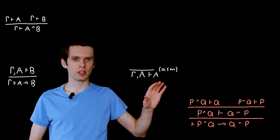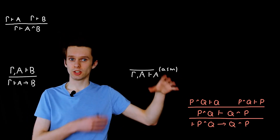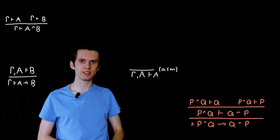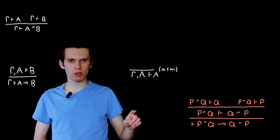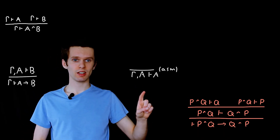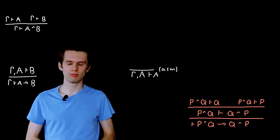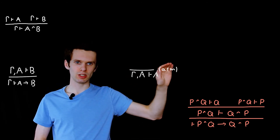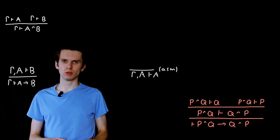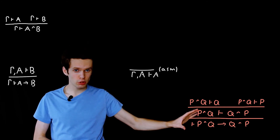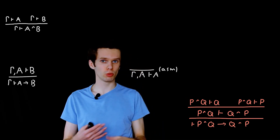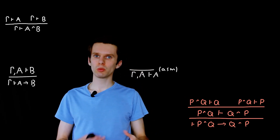We call this rule the assumption rule, or ASM. What it says quite simply is: if we have a propositional sentence A in our assumptions, then we can show that A is true. Note that there are no premises to this rule — nothing on top, just a line. This kind of rule is known as an axiom. In our proof tree, once we have all axioms at the top level and nothing further to prove — no more premises that need to be shown true — then we know we have completed our proof.